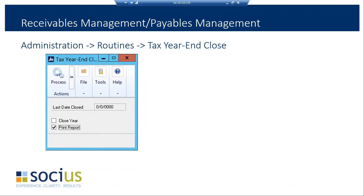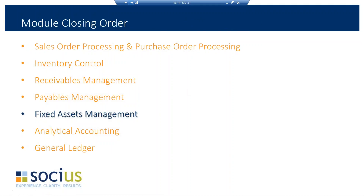Under Administration, Routines, and Tax Year-End Close, you can close your year-end for tax, print a report, and close the year. That covers receivables and payables.